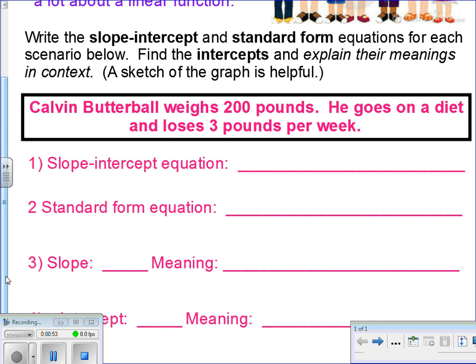It says Calvin Butterball weighs 200 pounds. He goes on a diet and loses 3 pounds per week. Obviously, that's going to be a linear function because we've got that constant rate of change. We're losing 3 pounds for every one week. Do you think our slope will be positive or negative? Well, yeah. If he's losing 3 pounds per week, then that should be a negative slope.